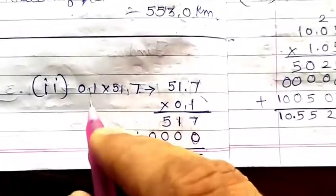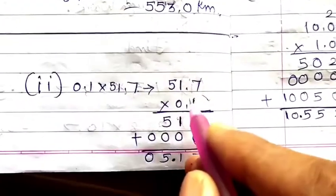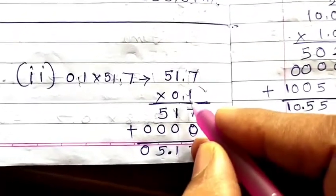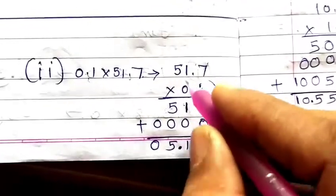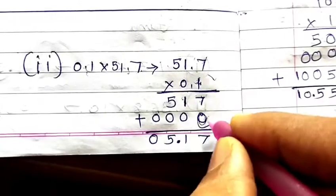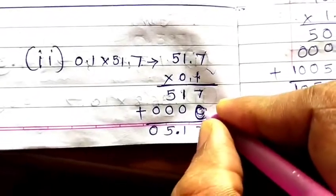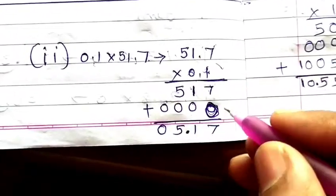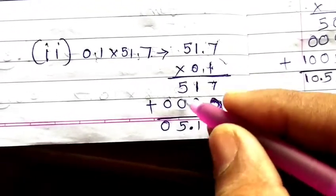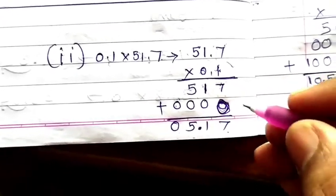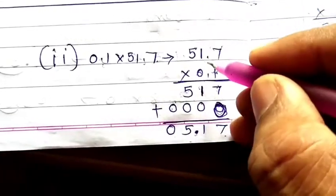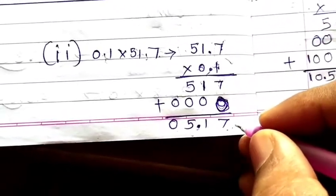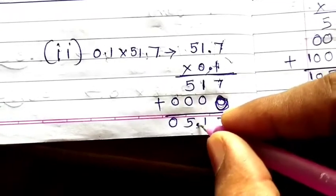Next: 0.1 multiplied by 51.7. Multiply 1 by 7 is 7, 1 by 1 is 1, 1 by 5 is 5. Place a zero, then multiply 0 by all digits giving 0. Adding: 517. Count decimal digits: one in 51.7 and one in 0.1, totalling 2. Leave 2 digits from the last and place your decimal — answer is 5.17.